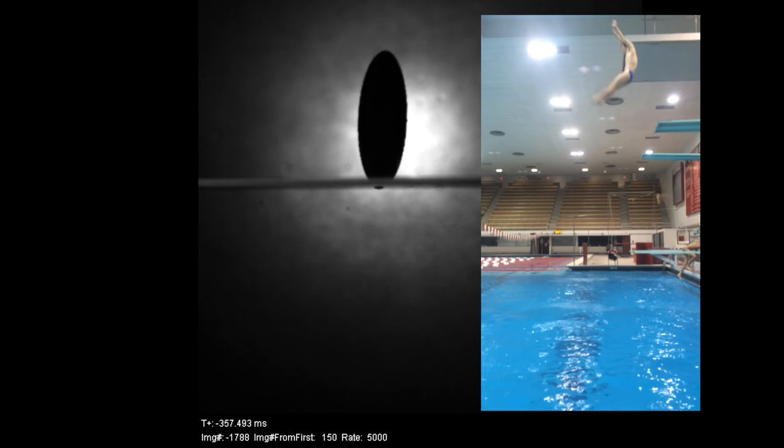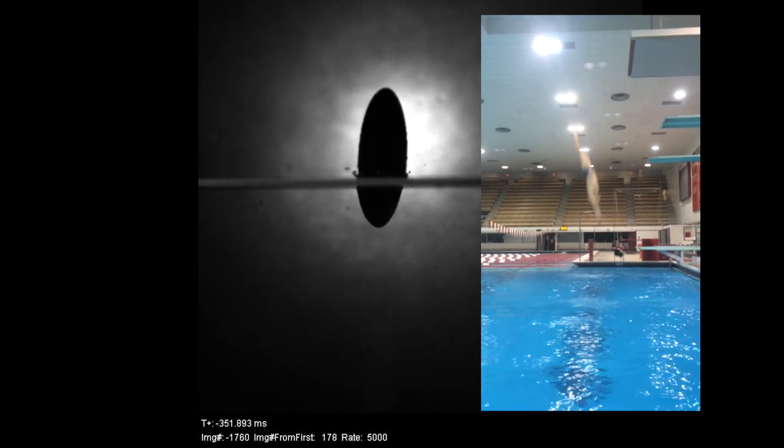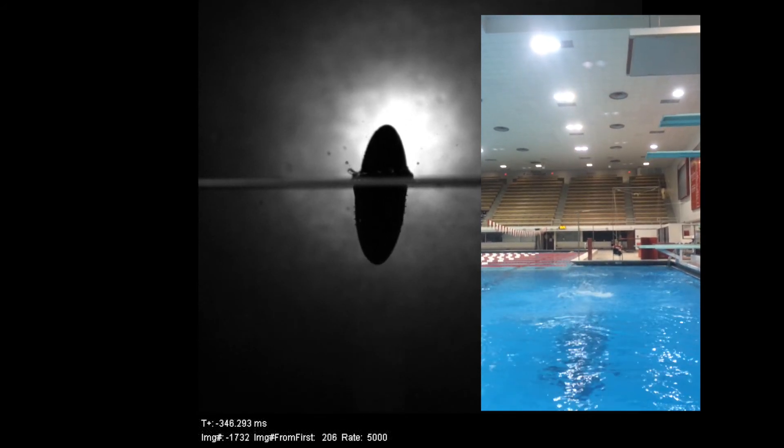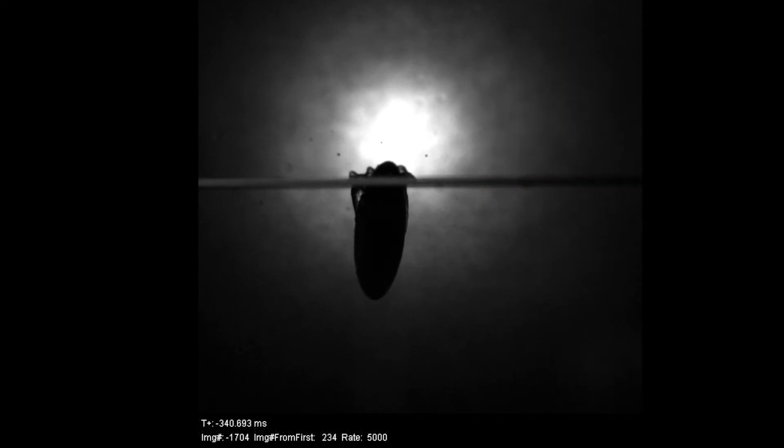Divers aim to enter the water hands first, forming an ellipsoid with their body. The ellipsoid is tapered so that it breaks the surface gently. Less surface area is disrupted, so the initial splash is much smaller.